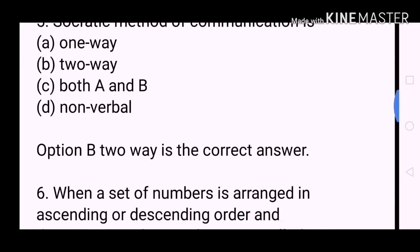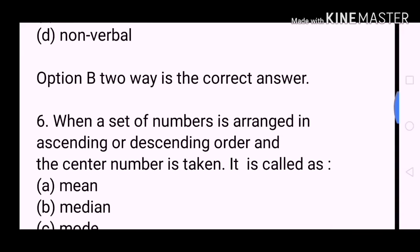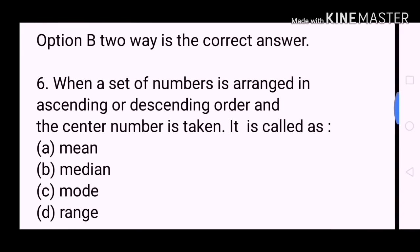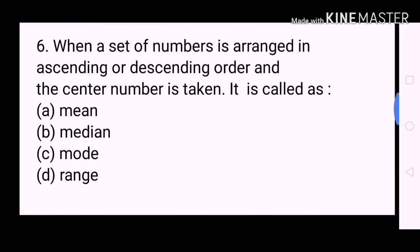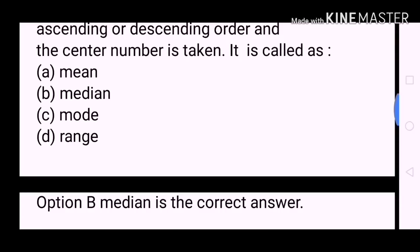Next question: When a set of numbers is arranged in ascending or descending order and the center number is taken, it is called as? A. Mean. B. Median. C. Mode. D. Range. Option B, Median, is the correct answer.